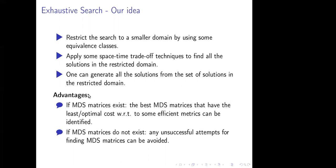Now, while doing exhaustive search, what advantages we have is that in case if MDS matrices exist, the best matrices which have the least optimal cost with respect to some efficient metric can be identified. Because you know the set of all MDS matrices of particular type, you can apply any metric that is suitable for hardware implementation. Then, the second advantage we have is that if MDS matrices do not exist, then we should not waste our effort and time in search of MDS matrices of particular type. Through exhaustive search, we can avoid such unsuccessful attempts in finding that.